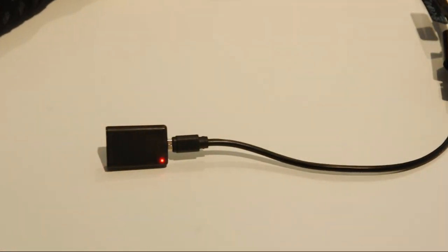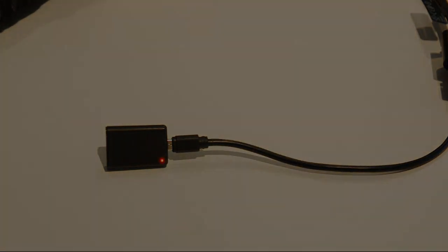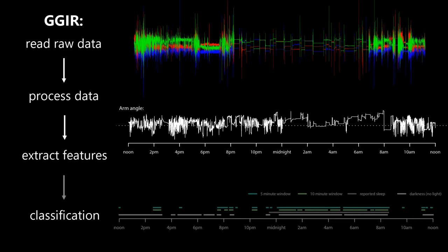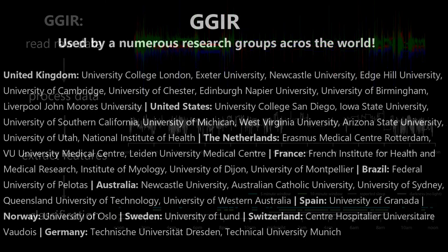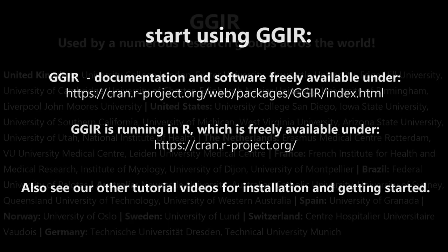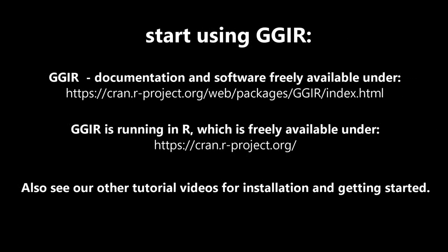This is where GGIR comes into play. GGIR reads the raw data from the three most commonly used sensor brands, and extracts sensor wear times as well as features it then uses to quantify physical activity and sleeping patterns. GGIR has already been used by a lot of researchers across the world, and is freely downloadable from the CRAN repository for R packages.